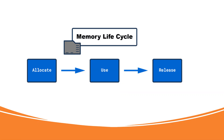In a memory lifecycle, we have three parts to discuss. Number one is how, when we declare any variables, we allocate the memory. Number two is using that memory for our business logic. The third part is whenever we no longer need those variables or objects, we release that memory. These are the three phases of a memory lifecycle. The first phase is allocation and the last phase is releasing the memory, both handled by the JavaScript engine.